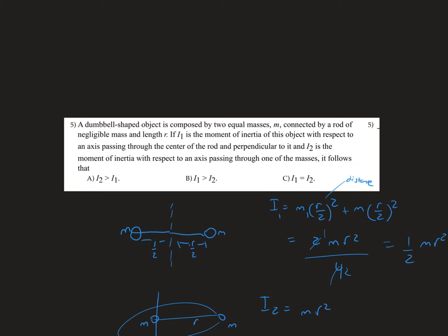In question number 5, a dumbbell shaped object is composed by two equal masses m connected by a rod of negligible mass and length r.